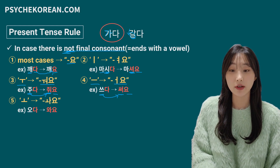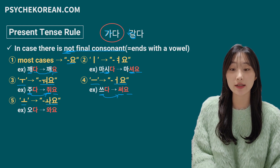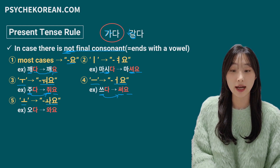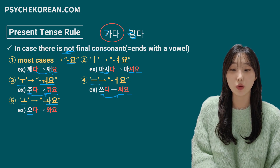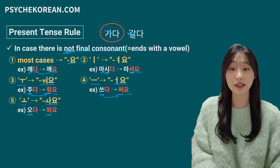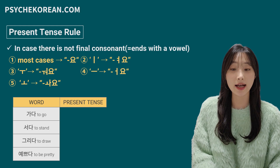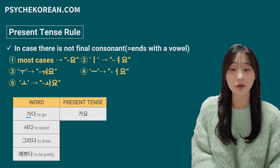If the vowel is 오, 와요 is the answer. For example, 오다, which means 'come' — the vowel is 오, so 오 is changed to 와요. Let's practice with examples. 가다 — its vowel is 아, so this follows the first rule: 가요 is the answer.